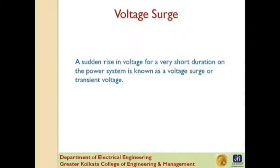By far the most important transients are those caused by lightning striking on a transmission line. When lightning strikes a line, the surge rushes along the line, just as a flood of water rushes along a narrow valley when the retaining wall of a reservoir at its head suddenly gives way. In most cases, such surges may cause the line insulator to flash over and may also damage the nearby transformer, generator, or other equipment connected to the line if not properly protected.